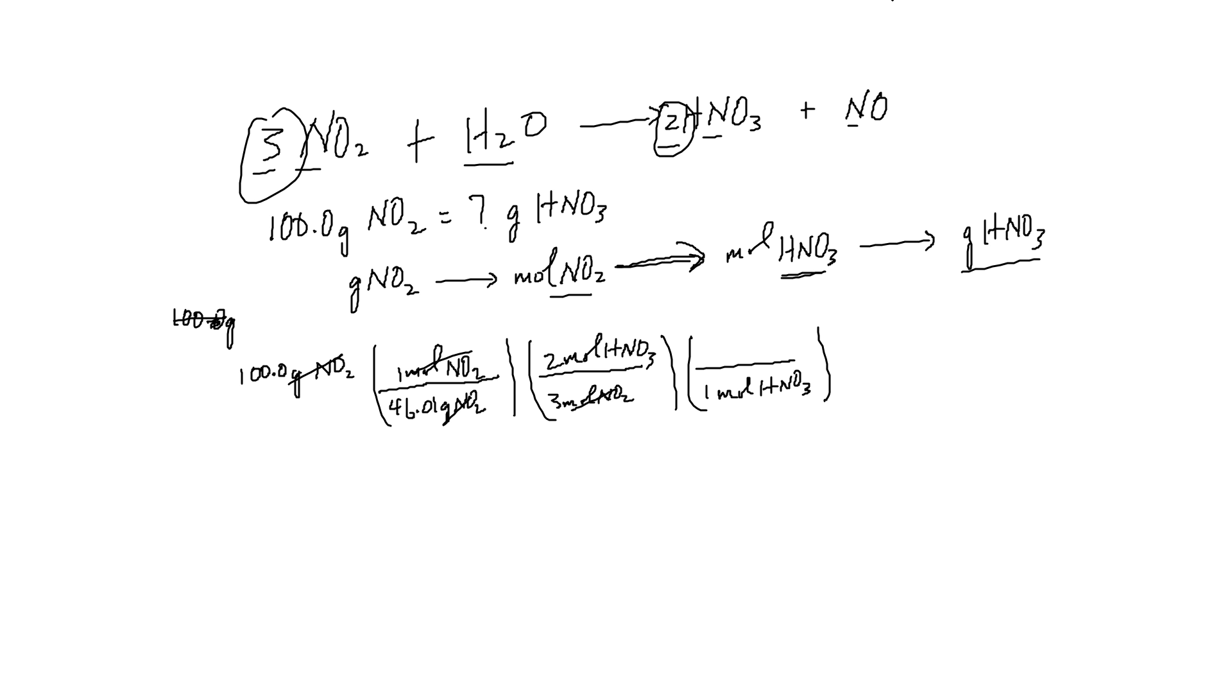And oxygen is 16.00 times 3. So according to my calculation, this works out to be equal to 63.01. So let me write that here. 63.01 grams of HNO3.